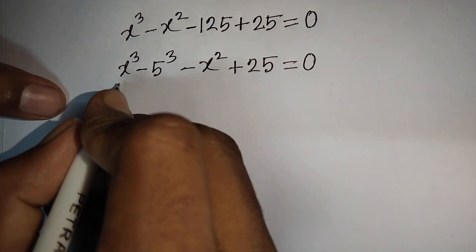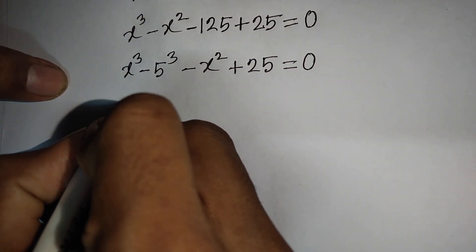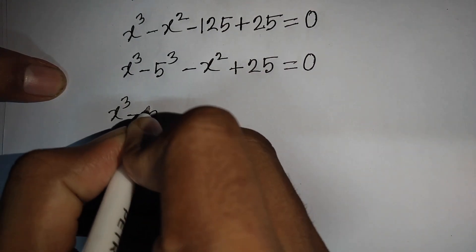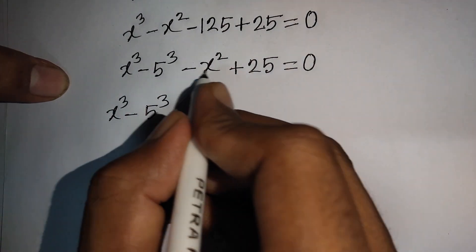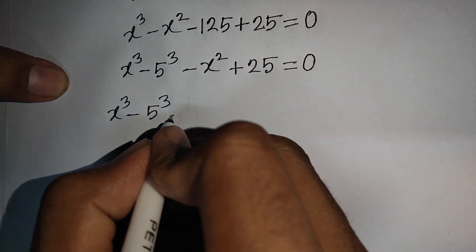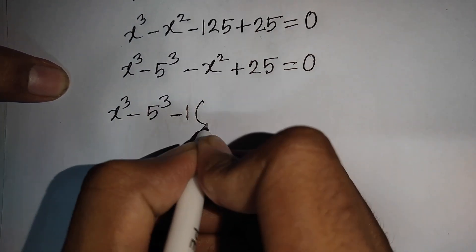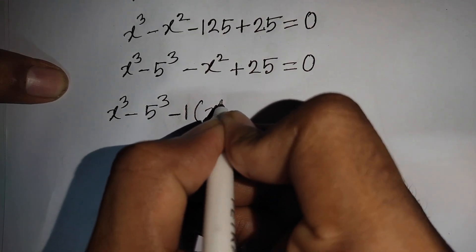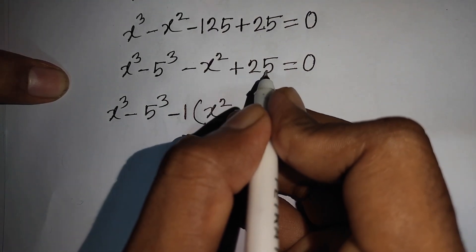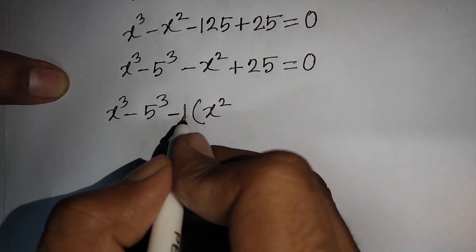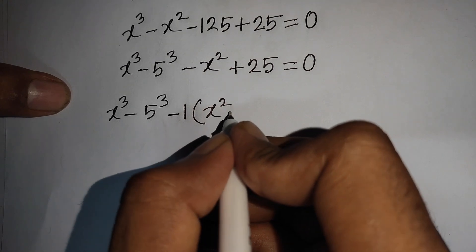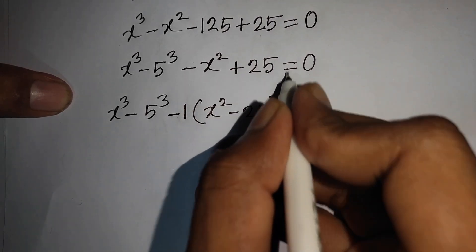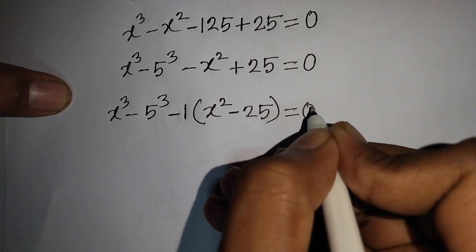Now we have x³ minus 5³. From here, negative 1 is common, so we take negative 1 out of the bracket. This means x² plus 25 divided by minus 1, giving minus 25 inside the bracket, equal to 0.